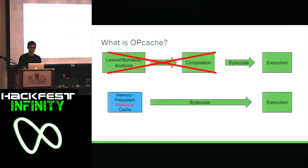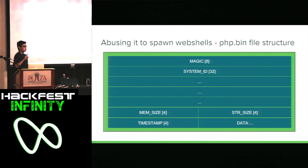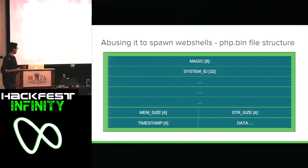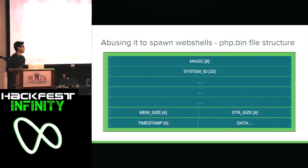Before we're able to do this, there are some technicalities to take care of. What you're seeing here is the file structure for a .php.bin file — all cache files will have this structure. It starts with 8 bytes of magic, which is the file signature, usually 'opcache' with a null byte at the end. After that, you have a system ID of 32 bytes. Then you have memory size, string size, and timestamp as meta information. And the data at the bottom is the actual bytecode that's going to be executed.